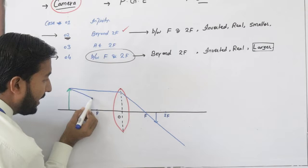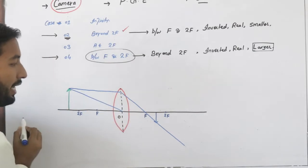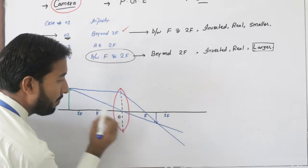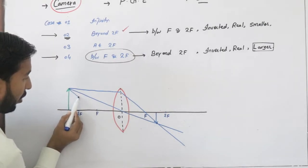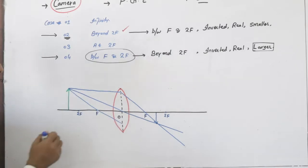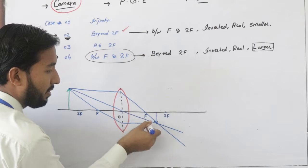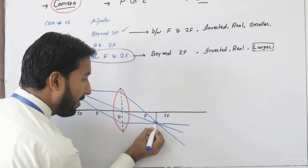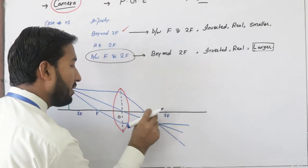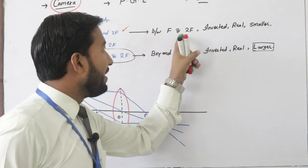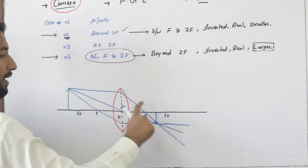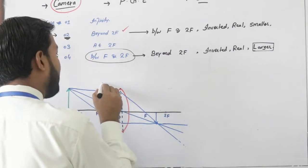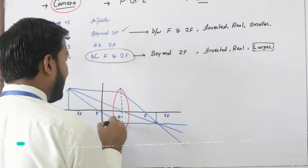Second ray ہماری straight ray ہے جو optical center میں سے پاس ہوتی ہے بالکل سیدھی۔ Third ray oblique ray ہے جو lens سے ٹکرانے کے بعد parallel to principal axis چلی جاتی ہے۔ جہاں یہ تینوں rays meet کریں گی وہاں image بنے گی — between F and 2F۔ Image inverted، real اور چھوٹی ہے۔ Construction بنانے کے بعد اس کے اوپر body بنا دیں — یہ ایک light proof box بن گیا۔